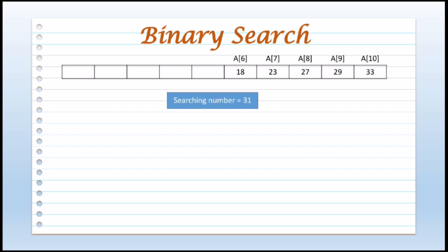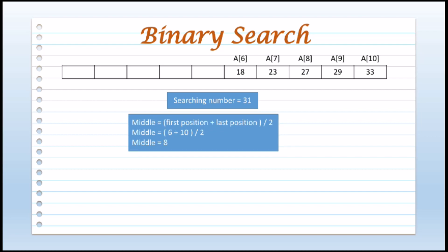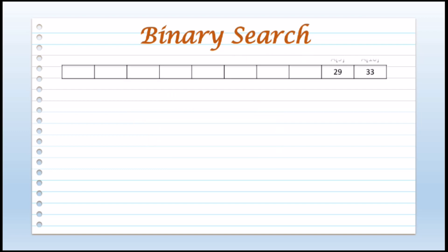Again we will find the middle value. First position is 6 and last is 10, so 6 plus 10 is 16 and 16 divided by 2 is 8. On the eighth position, the value is 27. Now 27 will be compared with 31, the searching number. Again 31 is greater than 27, which means our searching number may be present after the middle value. So the new array will start from the 9th position and the last value will be the 10th position.